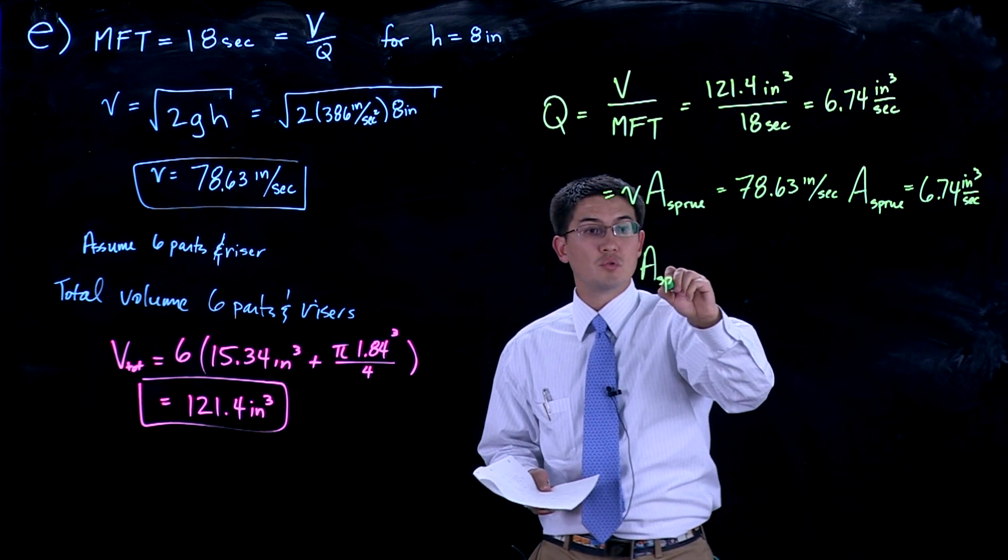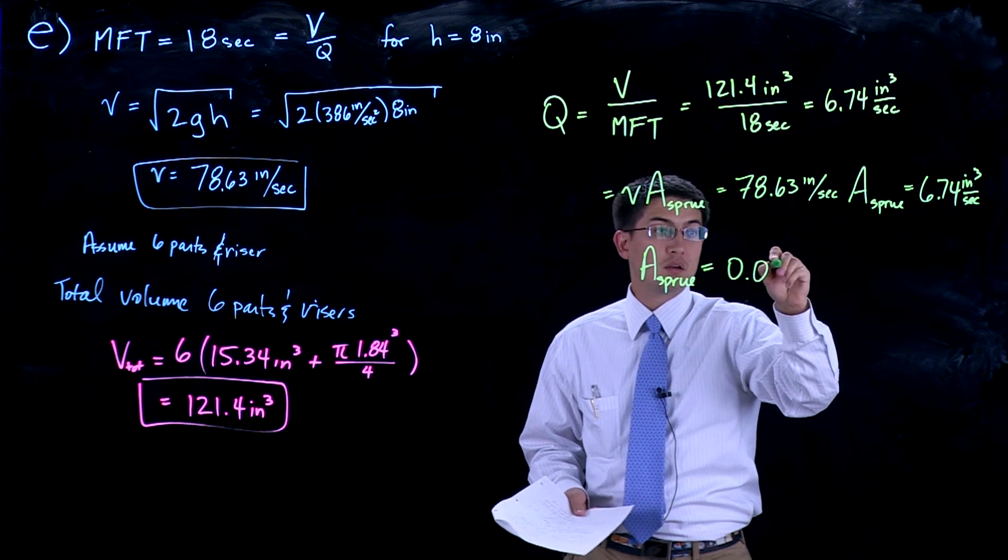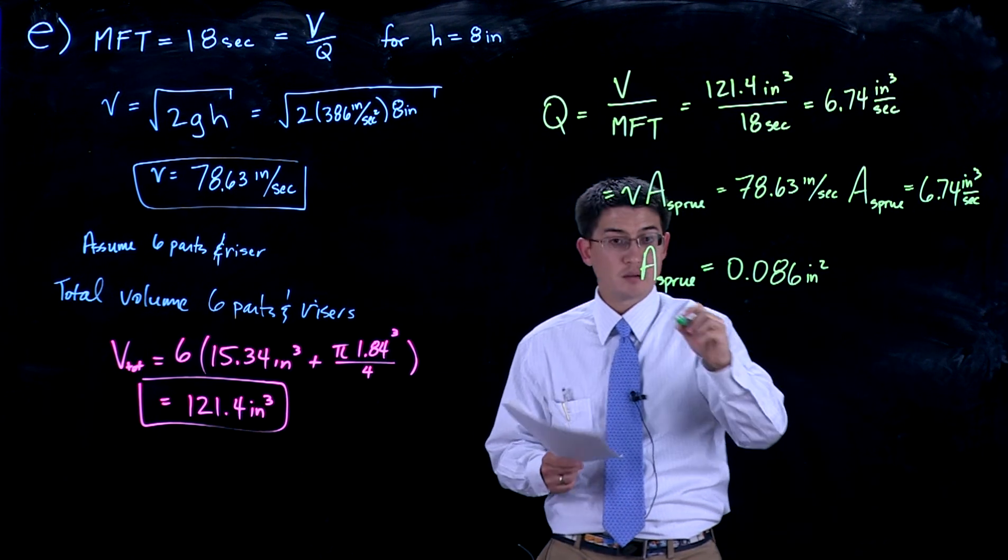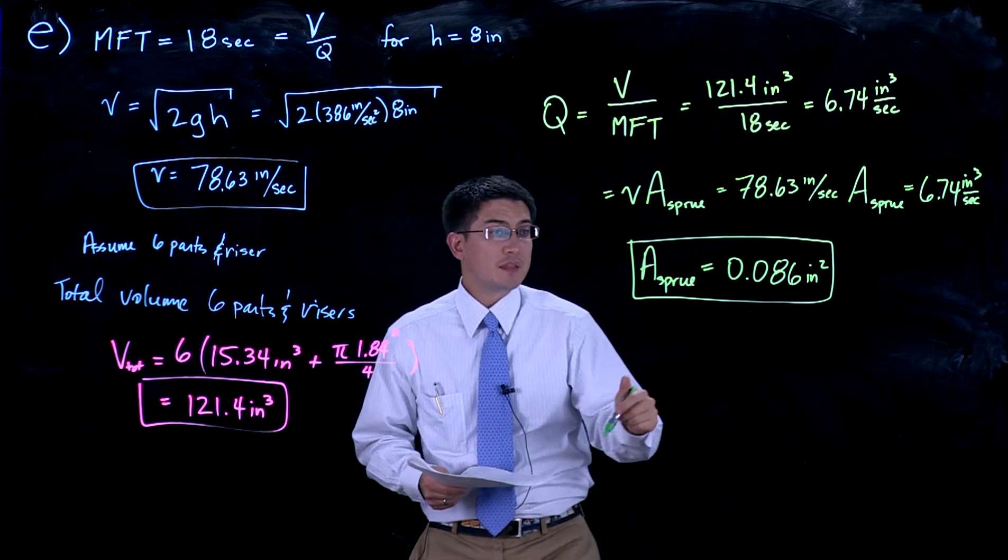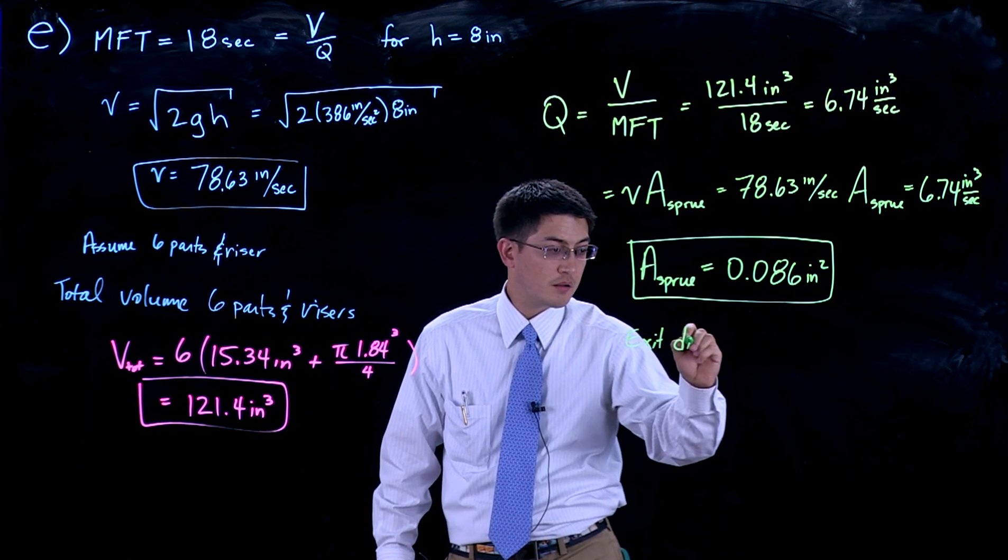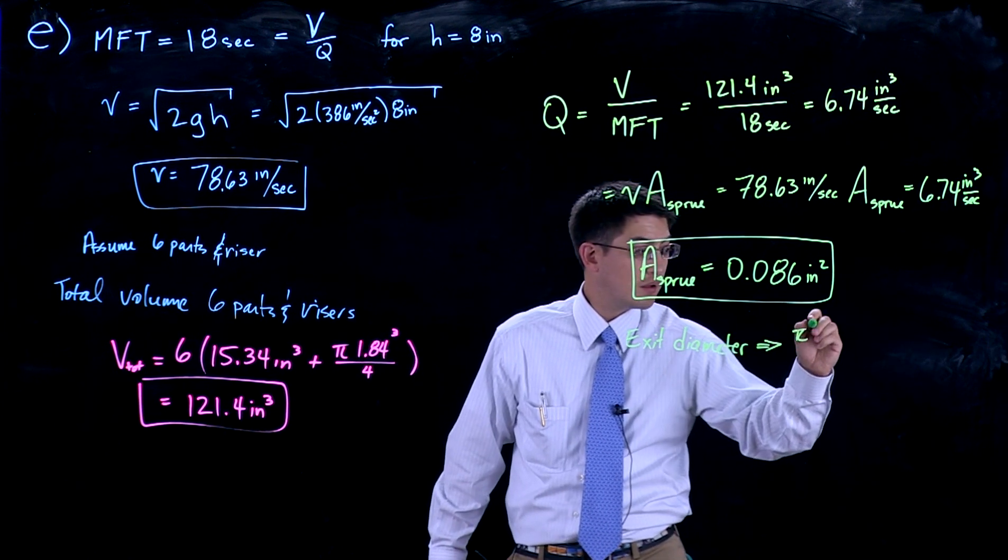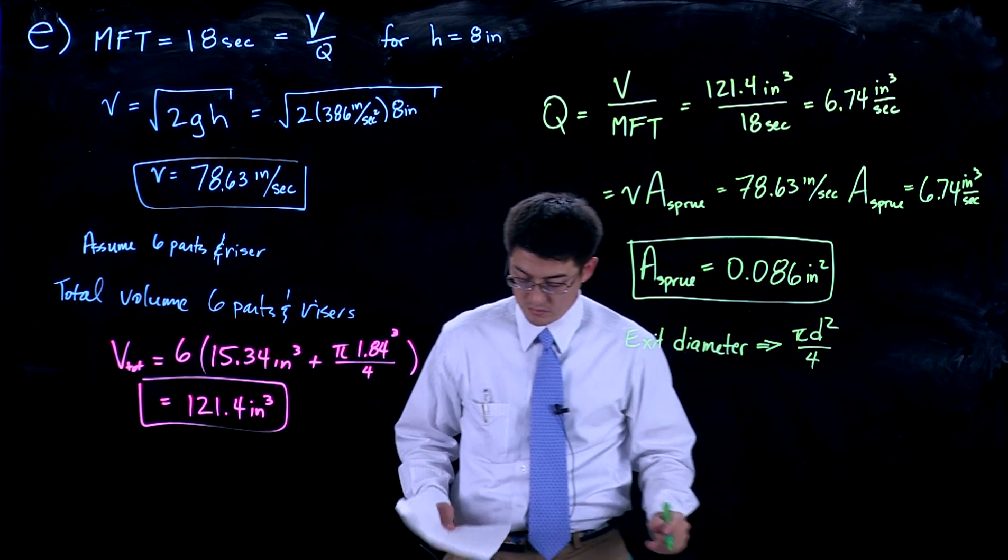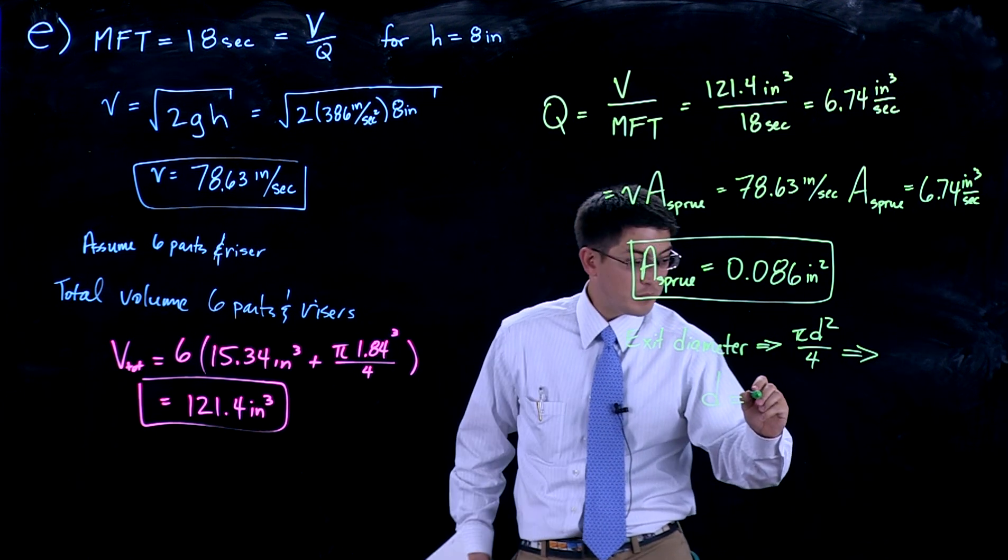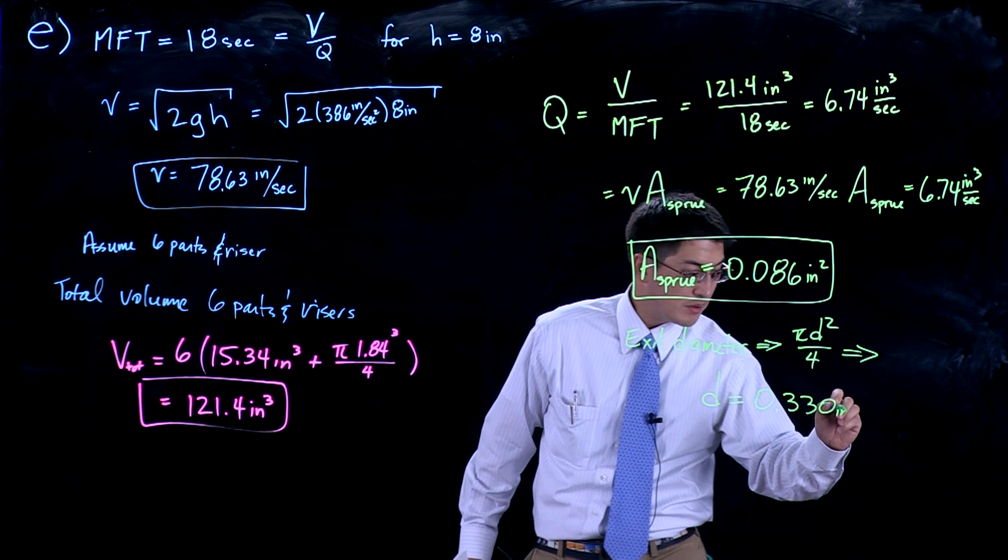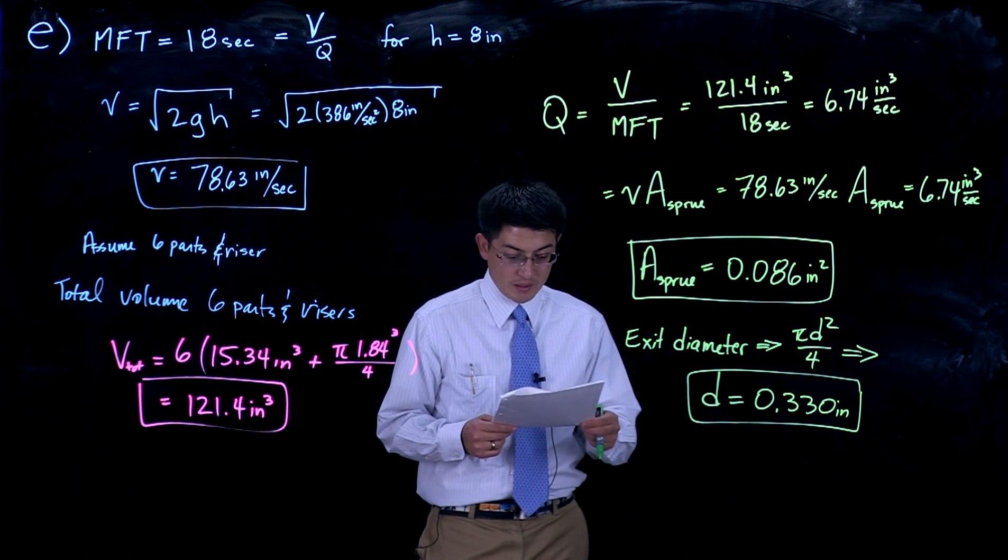This is going to give us a sprue cross-sectional area of 0.086 square inches. The exit diameter here, assuming this is circular, is 0.330 inch—so a third of an inch in diameter for the sprue exit.